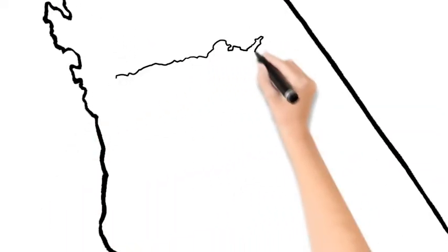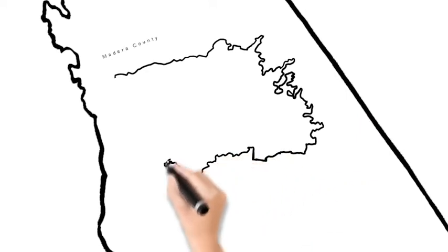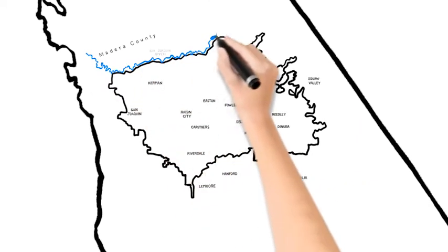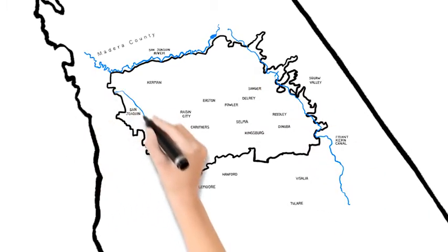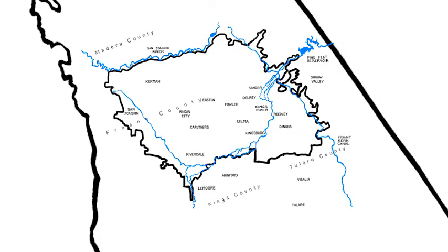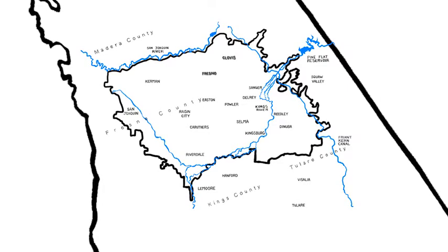This is the Kings Basin, located in the southern part of California's Central Valley. The Kings Basin supplies water to agricultural and municipal users in portions of Fresno, Kings, and Tulare counties, as well as the large population centers of Fresno and Clovis.